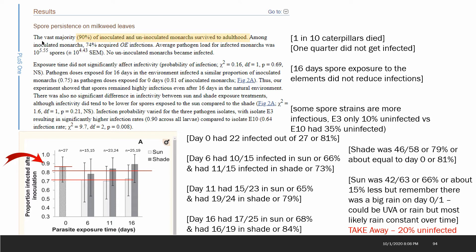Here are the results: the vast majority survived to adulthood, meaning that 1 in 10 caterpillars died or didn't make it to adulthood. Among those that were contaminated with OE, 74% were infected, so one quarter did not get infected that were given the spores. Exposure time did not significantly affect infectivity, so that weathering of the spores really didn't change anything. So 16 days spore exposure to the elements did not reduce infection. And it was noticed that some spores were more virulent than others.